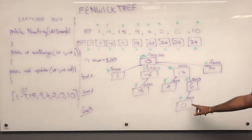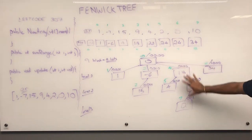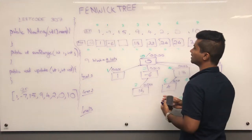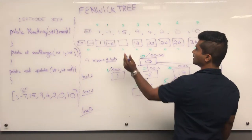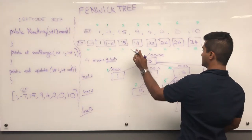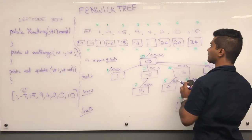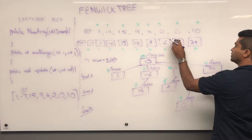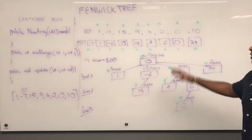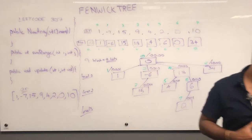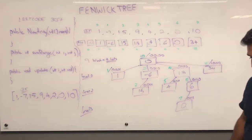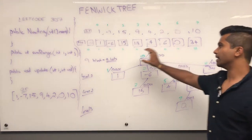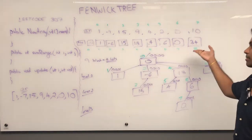We can update our array with the values in our tree: position 0 is 0, 1 is 1, 2 is -6, 3 is 15, 4 is 18, 5 is 4, 6 is 6, 7 is 0. This is our final Fenwick Tree, and this is what our final Fenwick Tree integer array looks like in code.